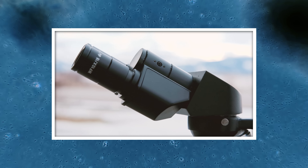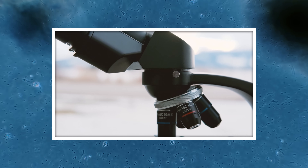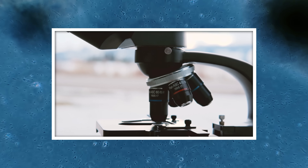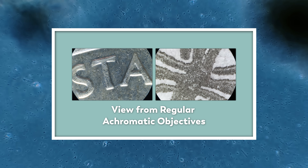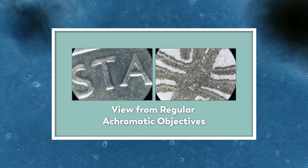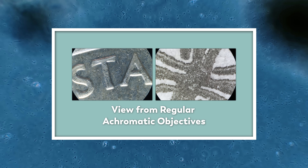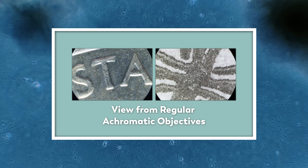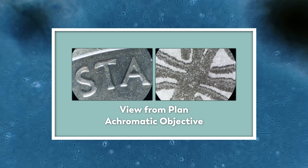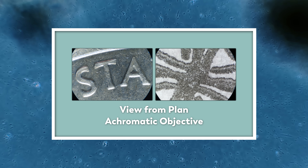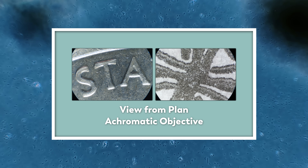These objectives don't just work on the microcosmos microscope — they will work on other DIN standard compound microscopes. Because of the way lenses are made, regular achromatic objectives display a curved image, which results in the edges of the field being slightly distorted and out of focus. But these plan objectives produce a flatter image across the entire field of view, resulting in an overall sharper image.